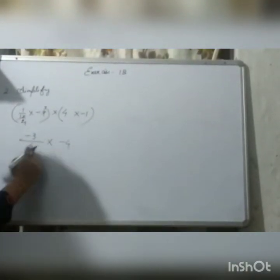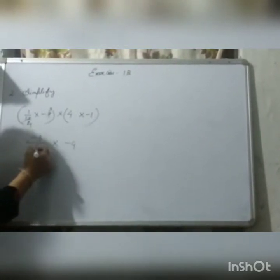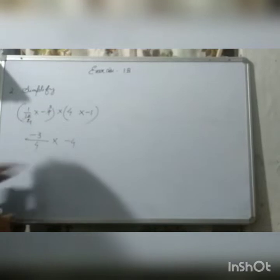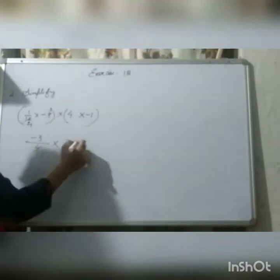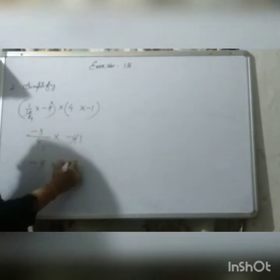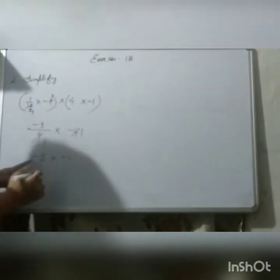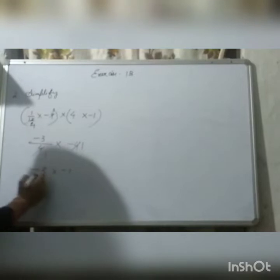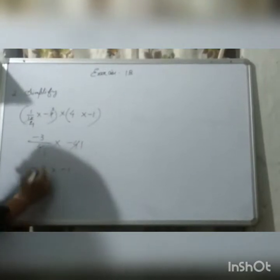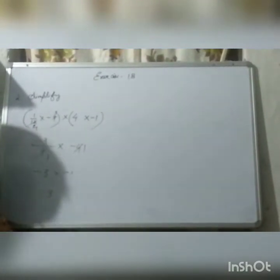Now, this 4 and 4 can cancel each other. Because in this, 4 is in denominator and in numerator place. So, 4 upon 4 is 1. So, in the numerator place, minus 3 is left. Here is minus 1. Now, minus 3 into minus 1 is 3. And minus into minus is plus. So, 3 will get a positive sign. So, 3 is the answer.